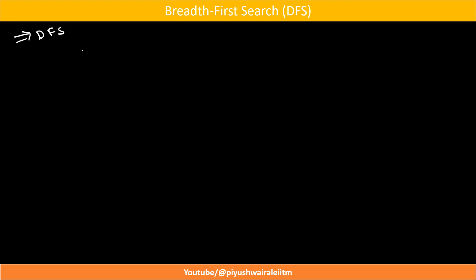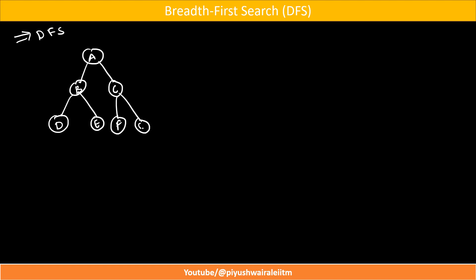Now let us discuss about breadth first search, but first let us revise what is DFS. What we would have done in DFS — say for example, I have this particular tree. From A I can go to B and C, from B I can go to D, E, and F, and this is G. Suppose this is my tree. What happens in DFS? If this is my initial state and we want to explore this tree and find F, which is my goal state — in DFS we follow a stack data structure, that is the last-in-first-out principle.